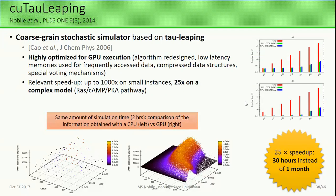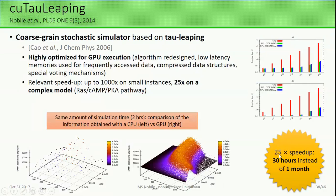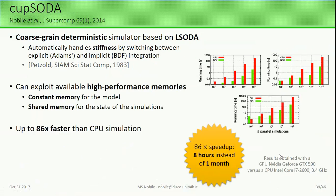We also created coarse-grained simulators to distribute multiple simulations on a GPU. One example is a stochastic coarse-grained GPU simulator based on tau-leaping, which is highly optimized and achieves very large speedups for small models and approximately 25 times speedup for complex models like the pathway shown — meaning what normally required more than one month can be reduced to a matter of hours. We also implemented a coarse-grained deterministic simulator based on LSODA, which handles stiffness by switching between implicit and explicit integration. CupSODA is highly optimized for high-performance computing memories, achieving approximately 80 times speedup — eight hours instead of one month.